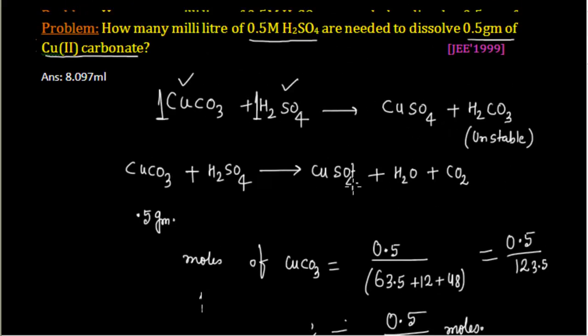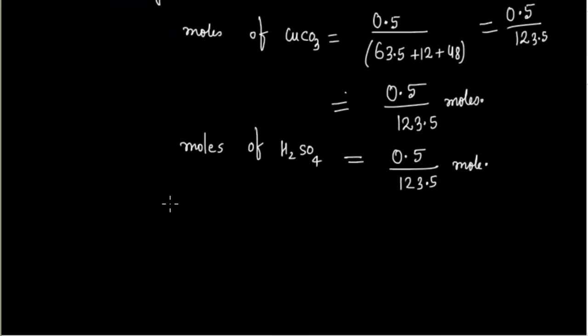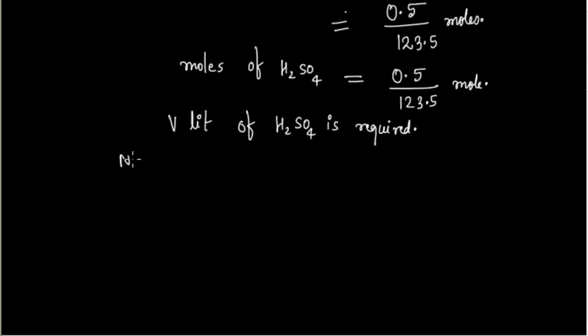Moles of H2SO4 can be calculated from volume and concentration. Let V liters be required. Number of moles of H2SO4 in V liters equals molarity times V, which is 0.5 times V.